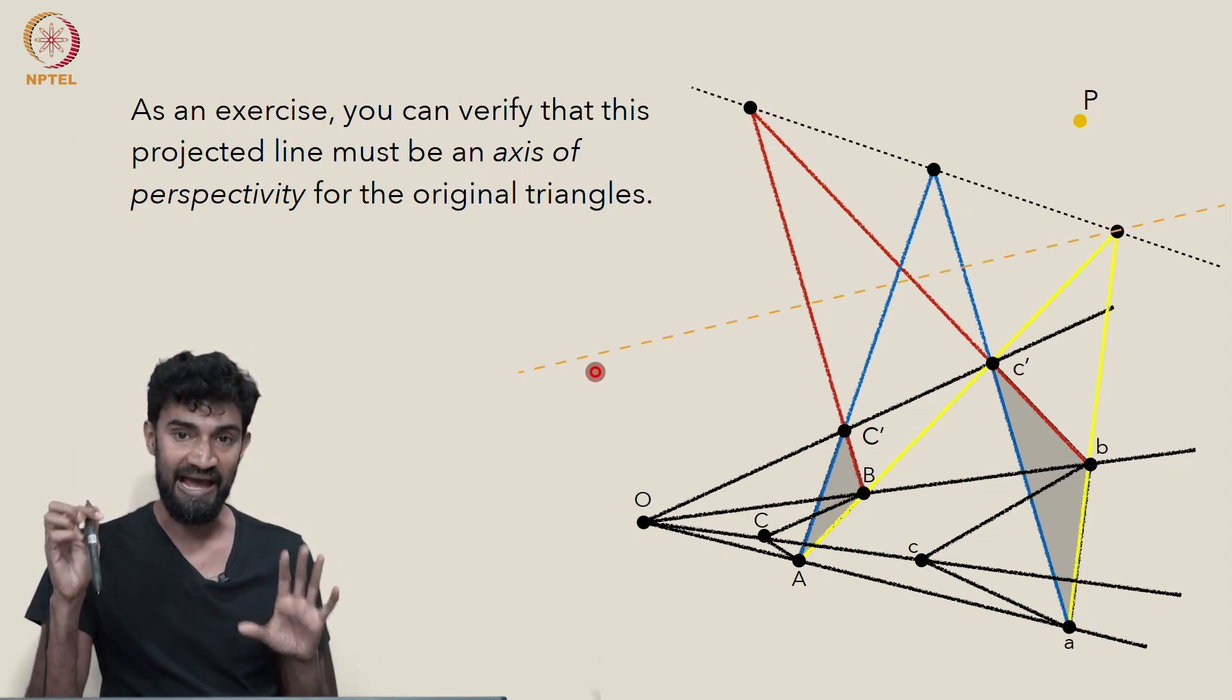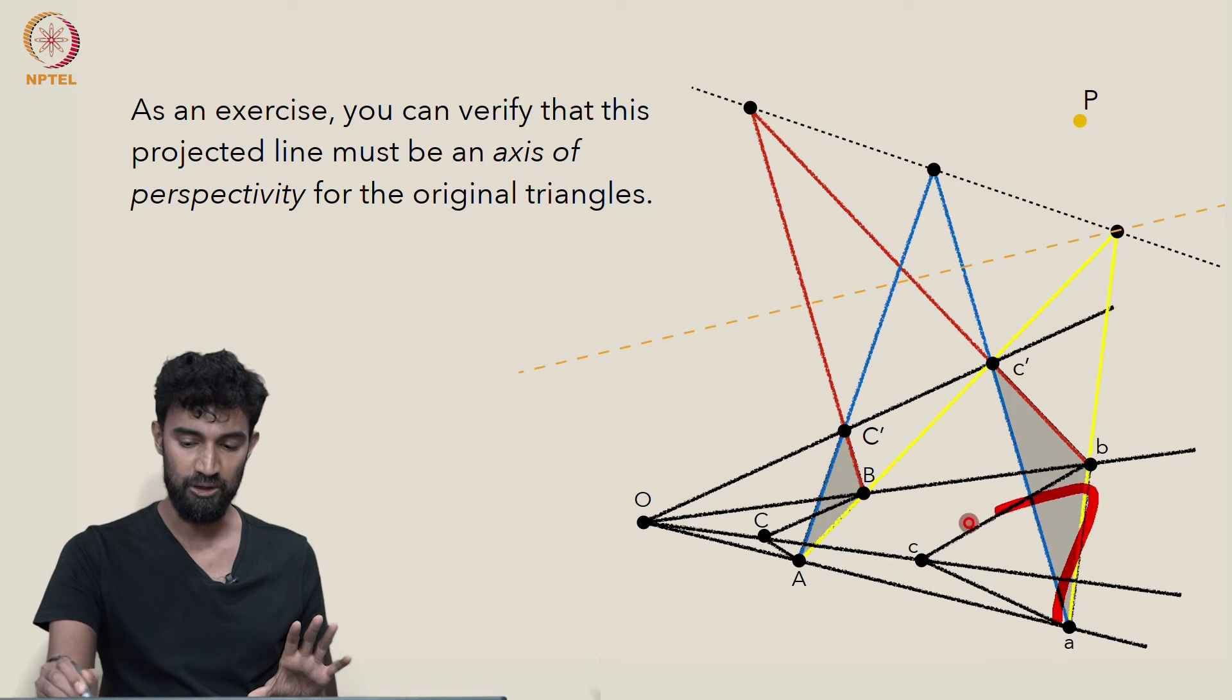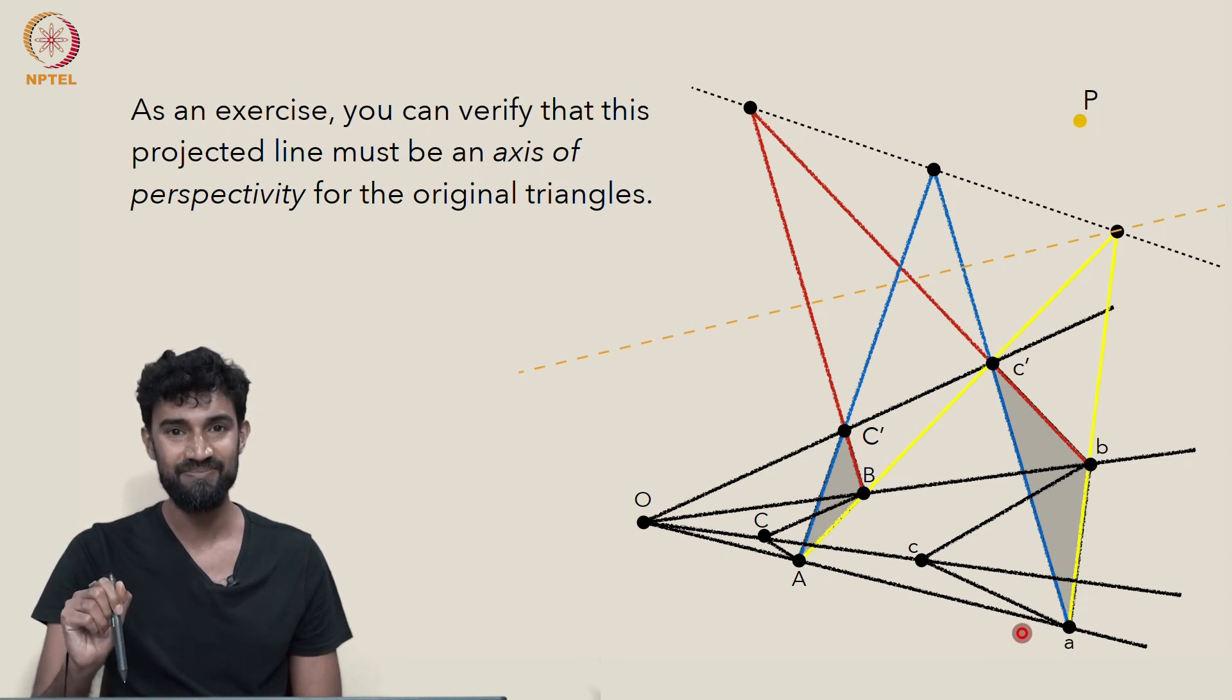can you prove that we get the axis of perspectivity for our original two triangles? So see if you can do that. Good luck.